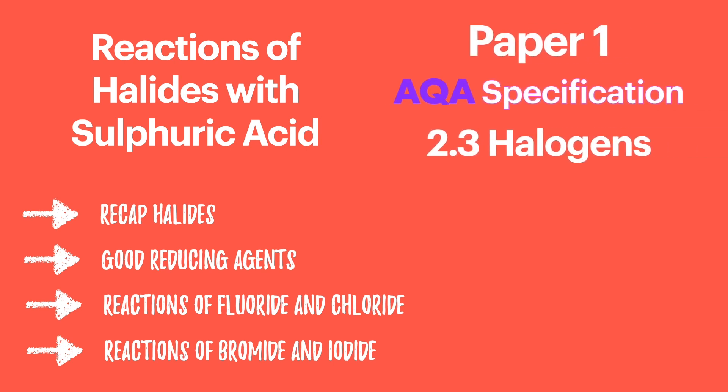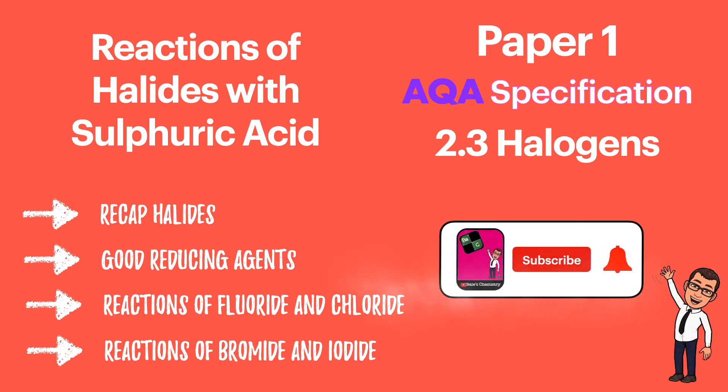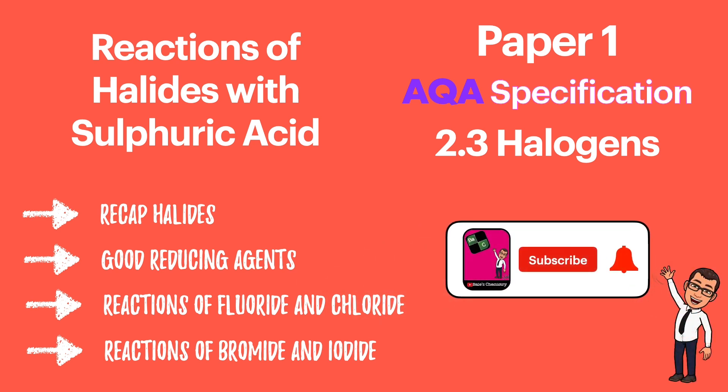This is AQA specification 2.3 halogens and you'll find it on paper one of your final exams. This video is part of a set of videos all about the halide ions and their reactions. Click on the subscribe and the bell to be notified when the next one's online.